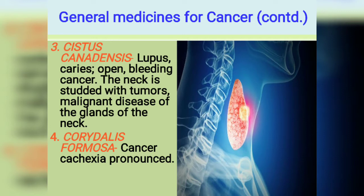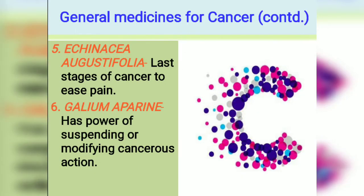Carbonium Sulphuratum is indicated in open bleeding cancer and malignant disease of the glands of the neck. You can see in the photo — that is thyroid cancer — malignant disease of the glands of the neck. It is also a very great antiseptic. There are many medicines to ease pain in cancer; one of them is Echinaceae, and the next one is Gallium Aparine.